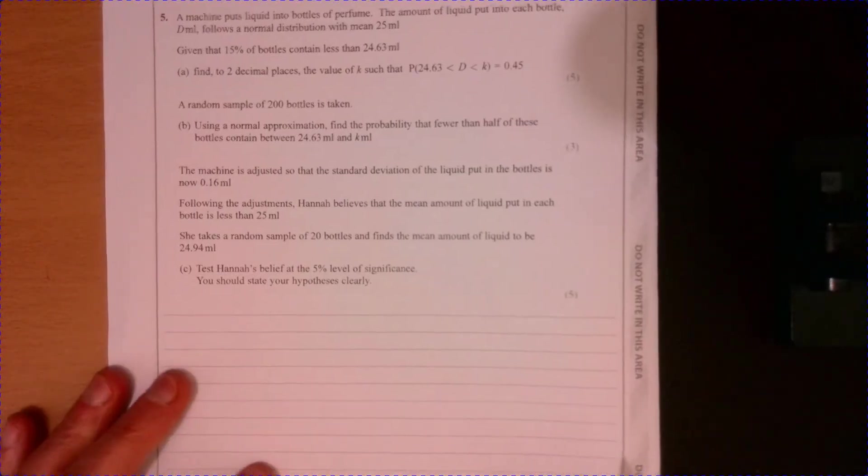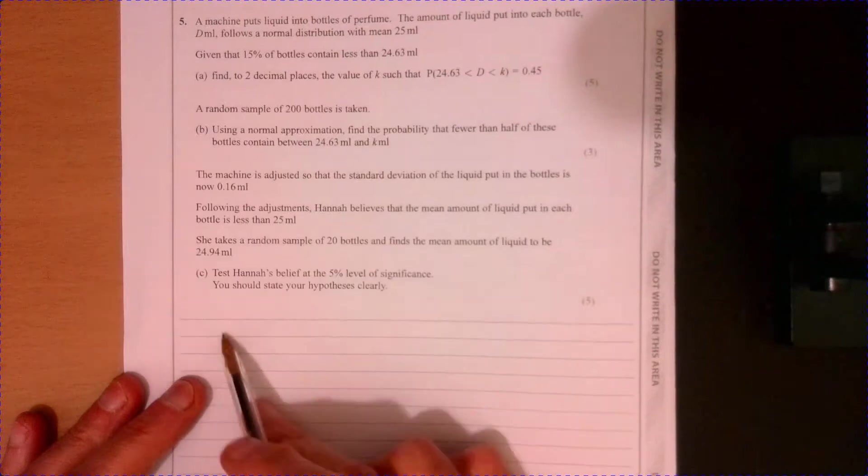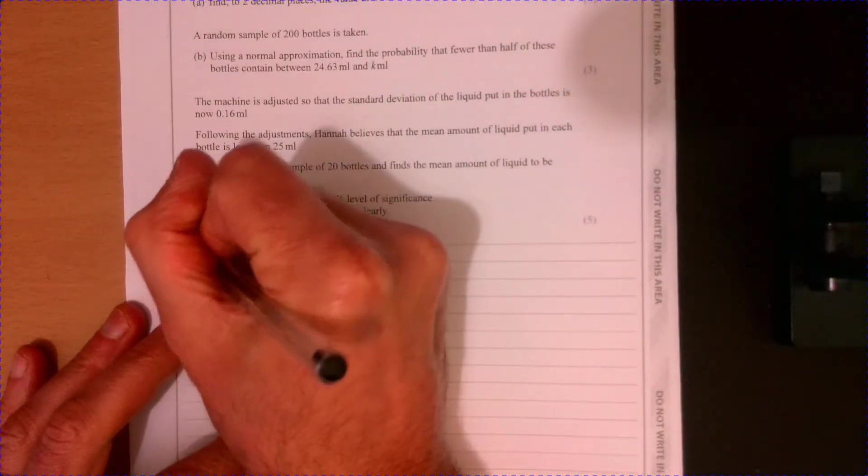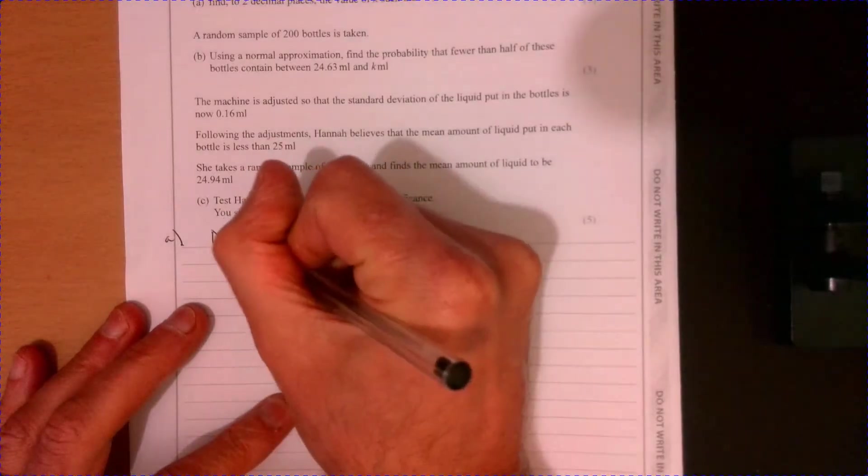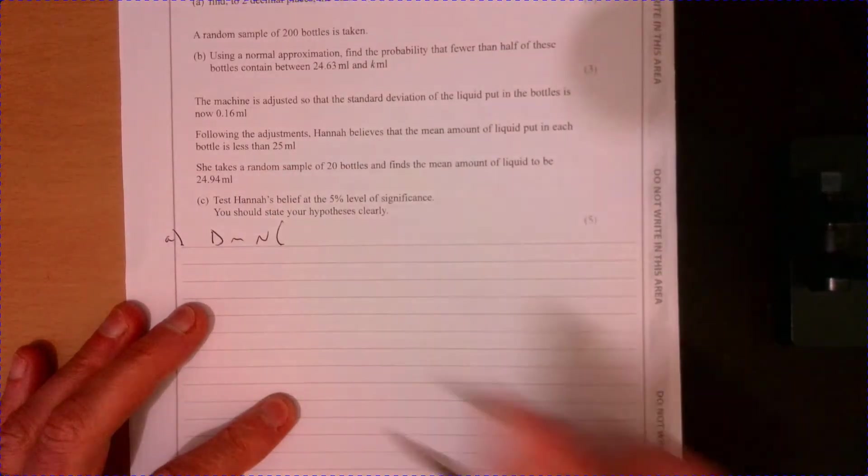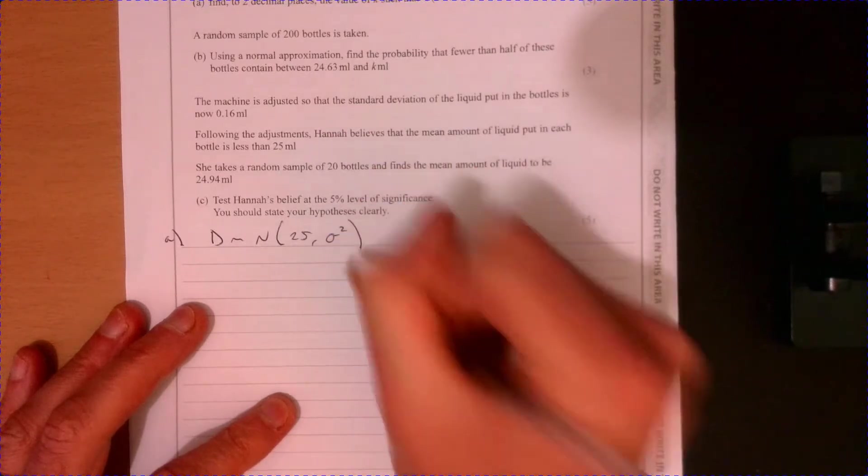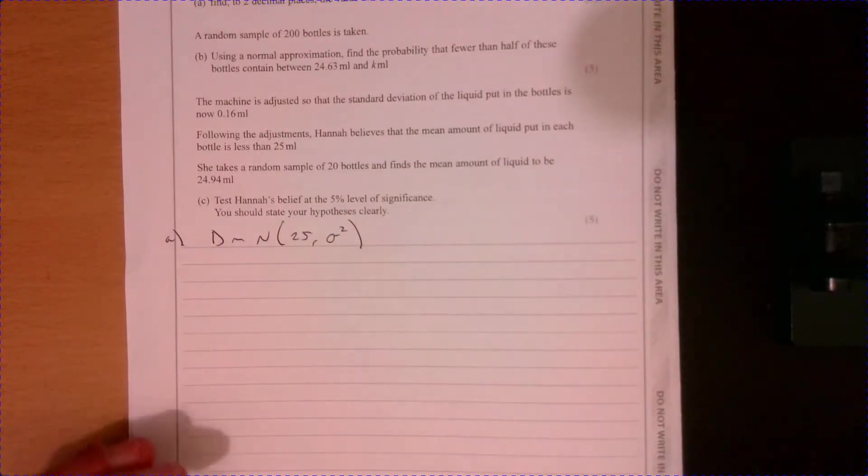Question five. So I'm going to give myself a little bit of room down here. I'm just going to summarize what we've got. So it follows a normal distribution, and we've got 25, but we don't know what the standard deviation and the variance are.